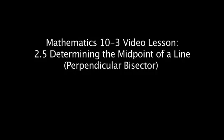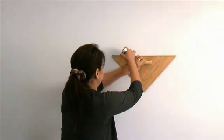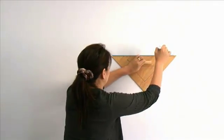This video demonstrates how to use a compass to draw a perpendicular bisector of a line segment. First, draw the line segment AB.